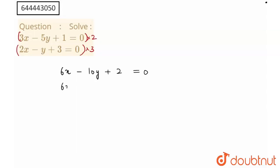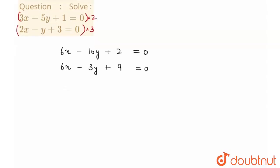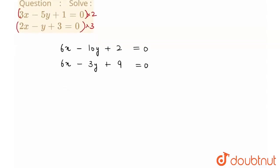And my second equation would be 6x minus 3y plus 9 is equal to 0. Now what will I do? Now I will subtract my first equation from my second equation. So here 2 minus 1, what will I get here?